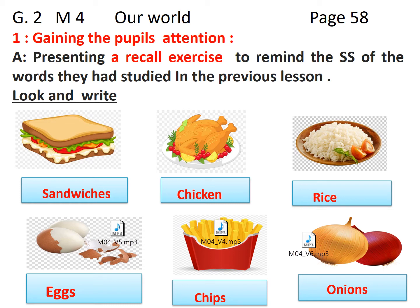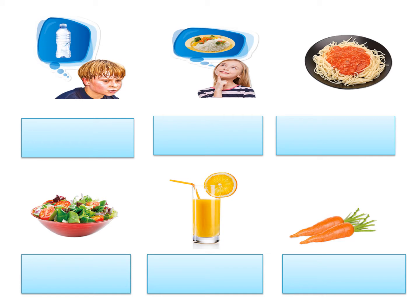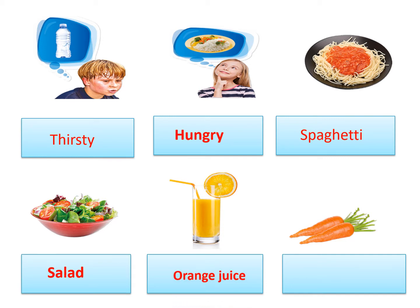Now we come to another part of the words we had learned before. Picture number one: serious. Picture number two: hungry. Picture number three: spaghetti. Picture number four: salad. Picture number five: orange juice. The last picture, number six: carrots. Very good — in this way we remember well the words we had learned before.